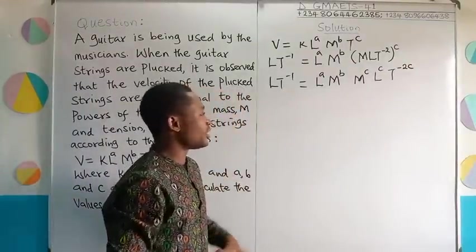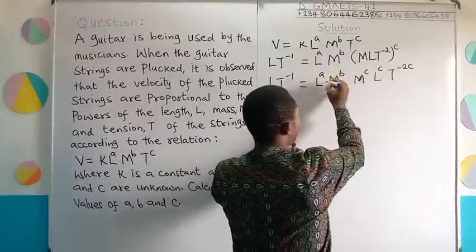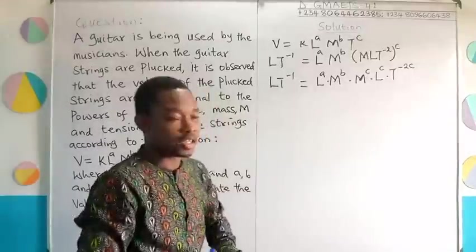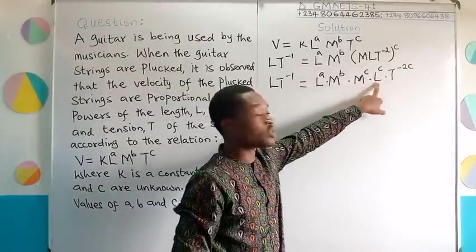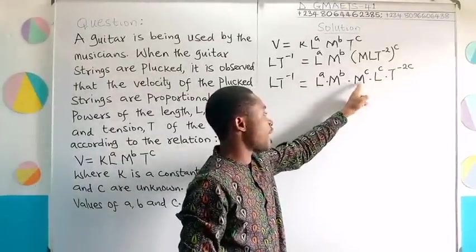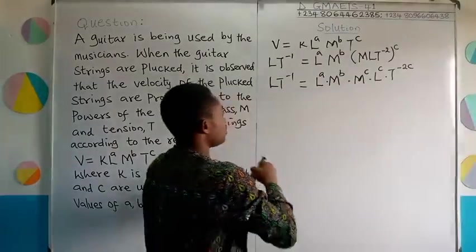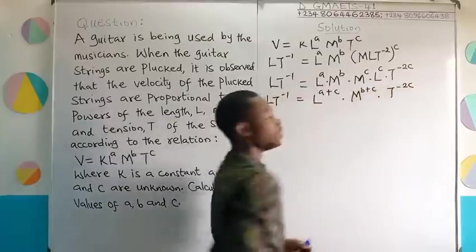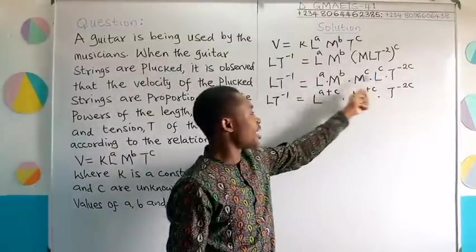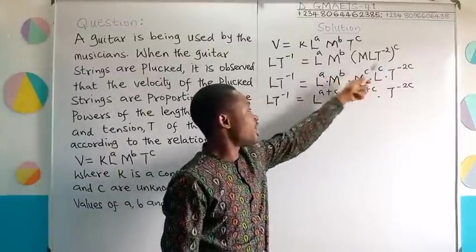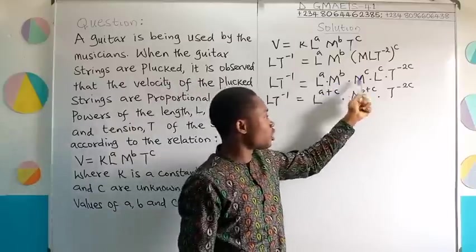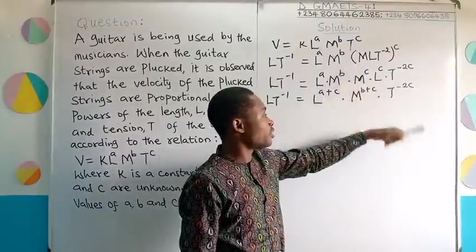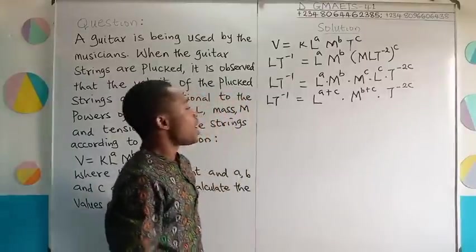So, at this point, you would notice that we have the same basis here. Take note that these are multiplied times. Let me use a dot. These dots here, I'm using it to represent multiplication. This L, L, we can use multiplication law of indices. M, M, multiplication law of indices. If I do that, I'm going to get... Did you take note? I picked one of the L's, and then added their powers. That is A and C. I got A plus C. Then, picked one of the M's here. I had this, and then added their powers, B plus C. Finally, we have T raised to the power of minus 2C.